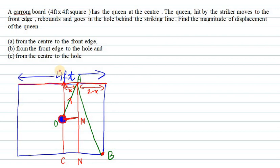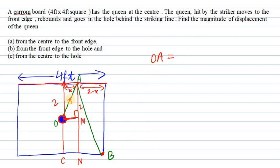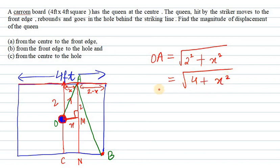To find X, we consider triangle OMA. OM equals X and AM equals two feet (half of four feet). OA is the hypotenuse, so OA equals the square root of (OM² + AM²), which gives us the square root of (X² + 4).